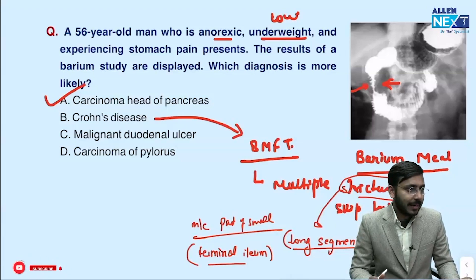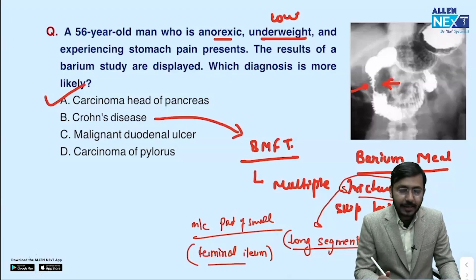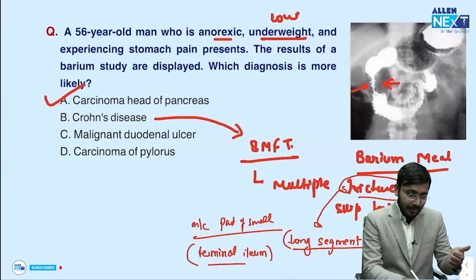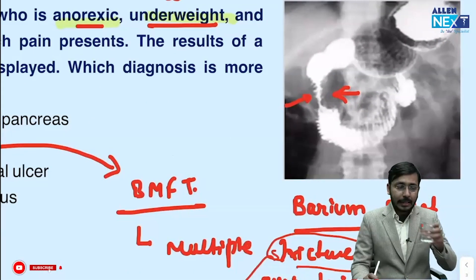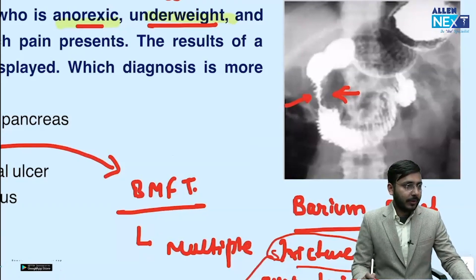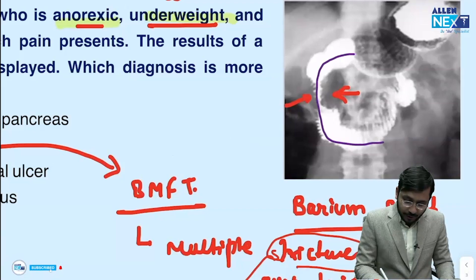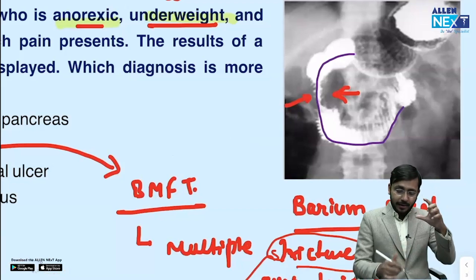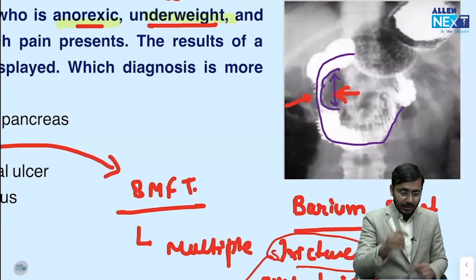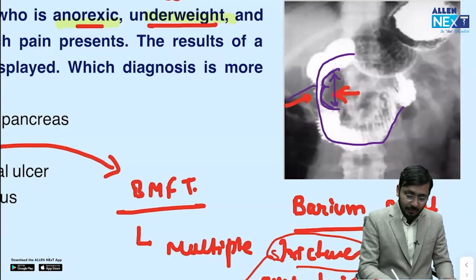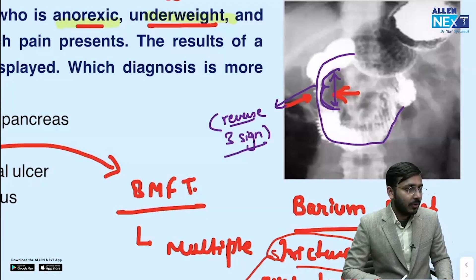To re-explain CA head of pancreas: the hints in the question are that the patient is elderly, anorexic, and has weight loss. On the barium meal, we see the C-loop of duodenum — normally not so widened — but here there is a big impression on the medial wall of the second part of the duodenum and widening of the C-loop. This impression on the medial wall is known as the reverse three sign.